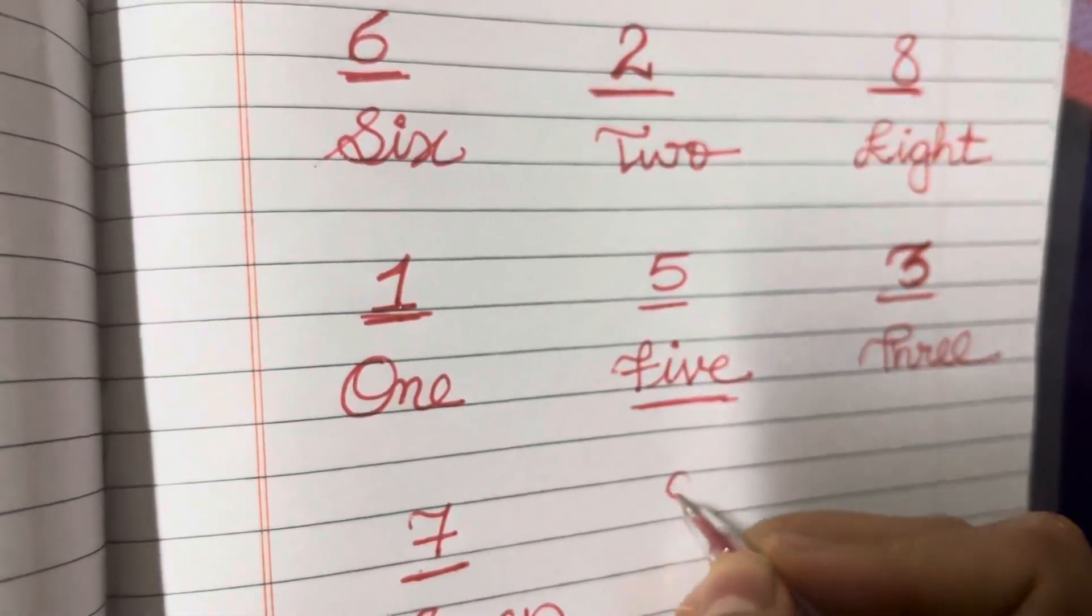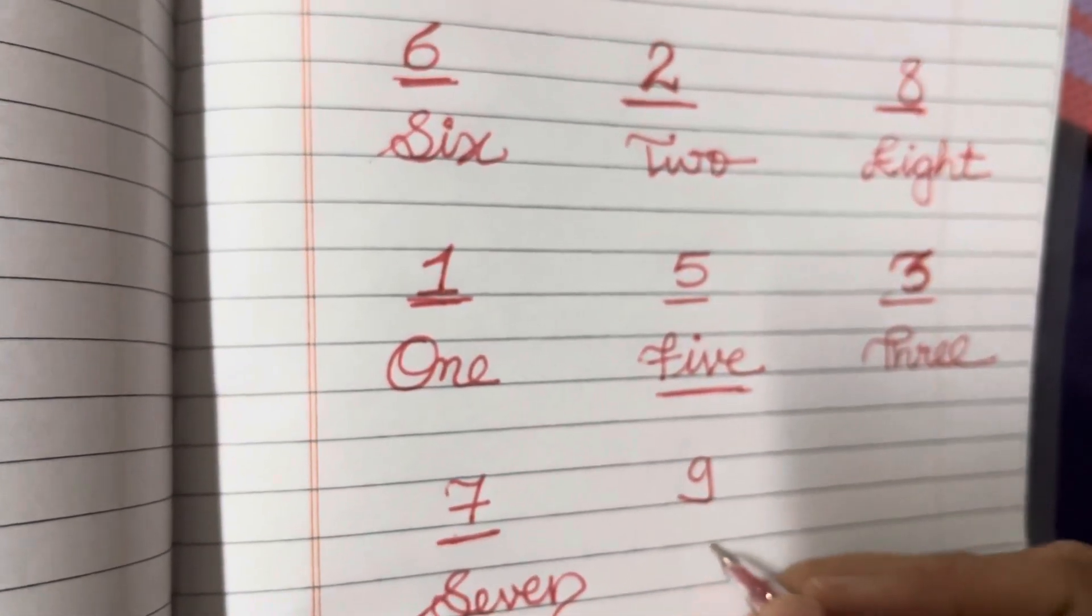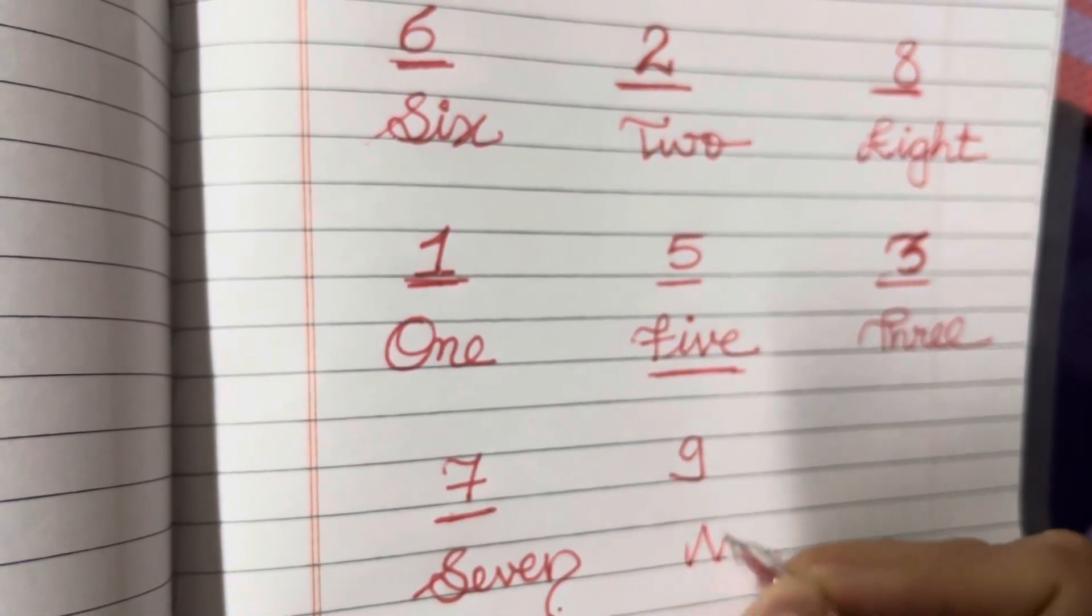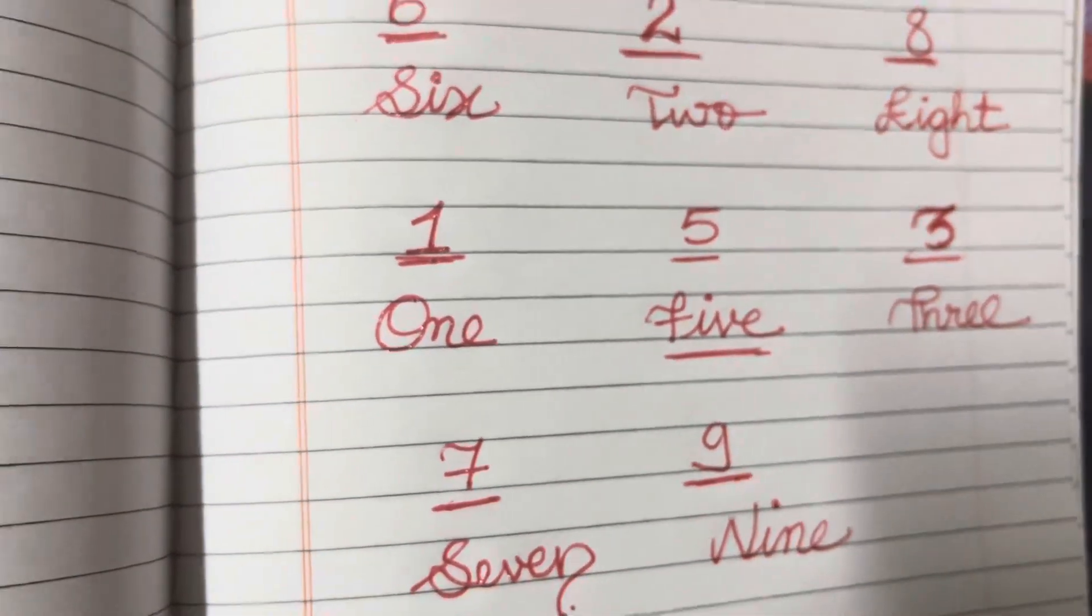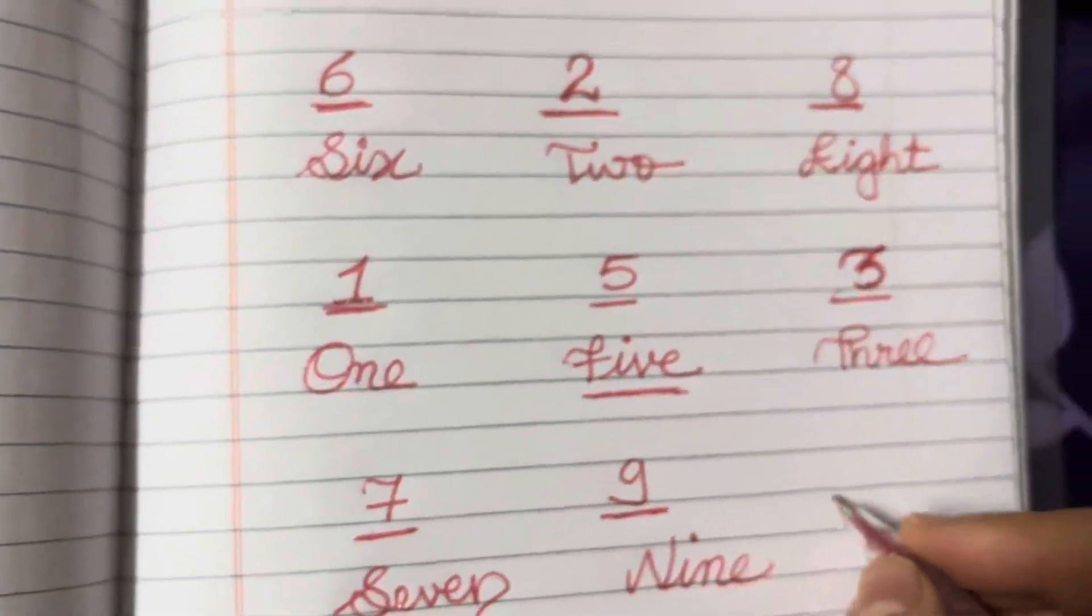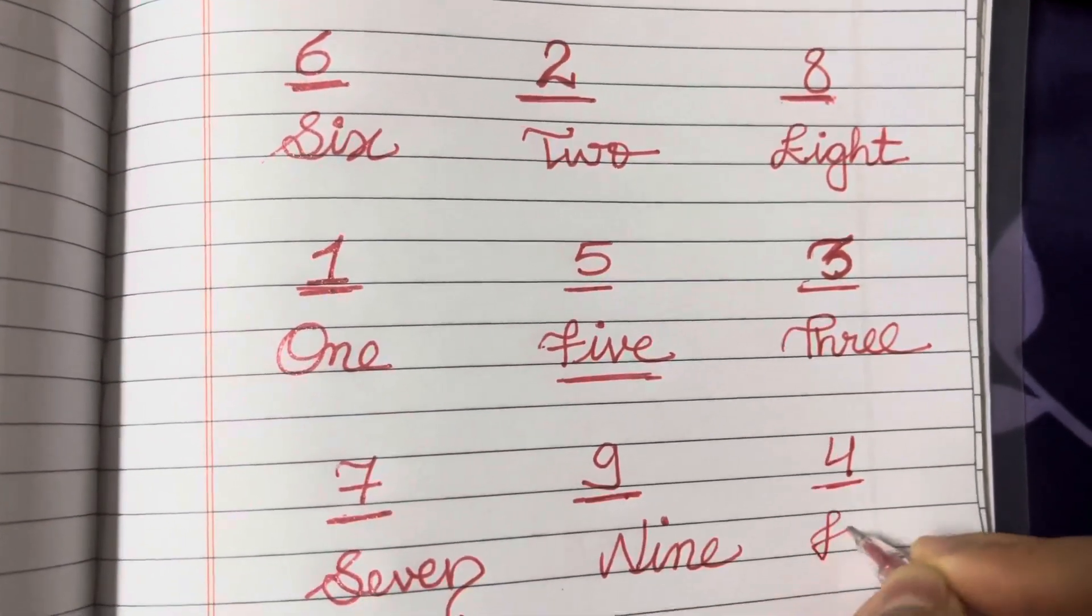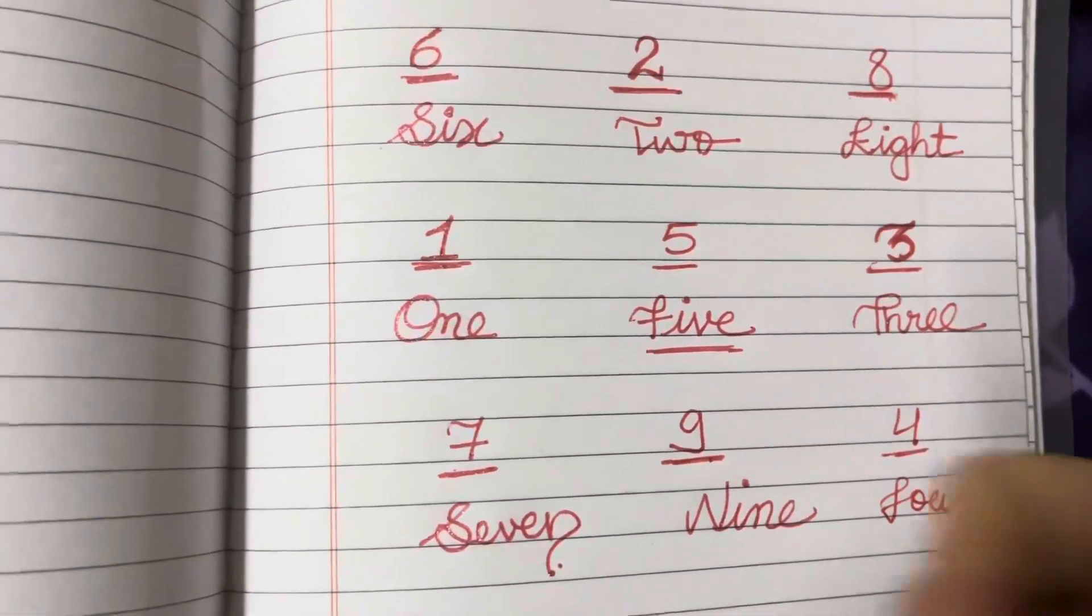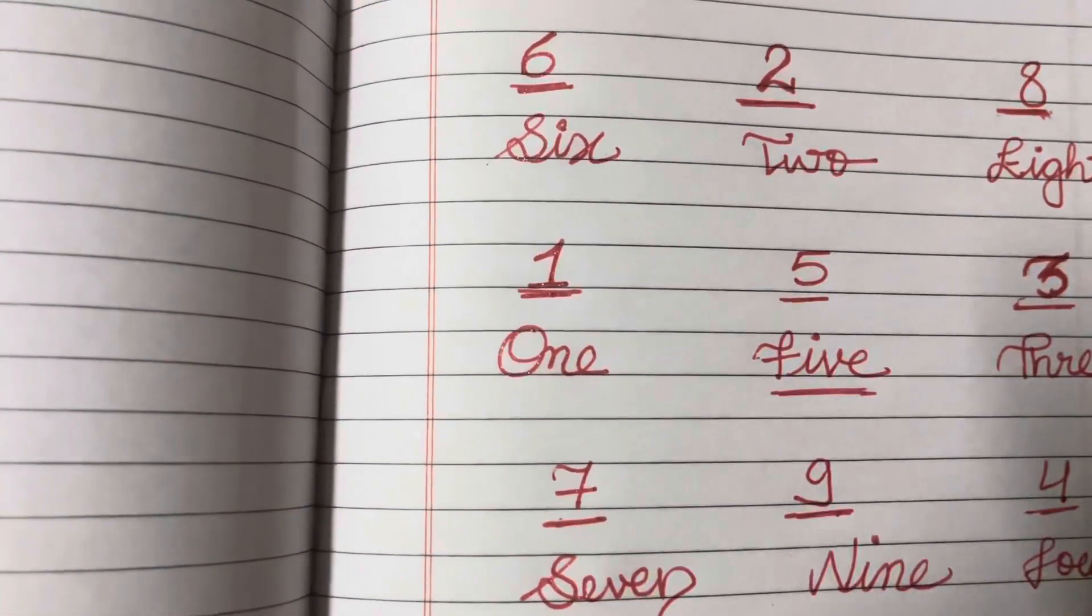Next number is number 9. The spelling of 9 is N-I-N-E. Next number is number 4. What's the spelling of 4? F-O-U-R. Like, share, and subscribe for number learnings and alphabet learnings. Like the video and share with your friends.